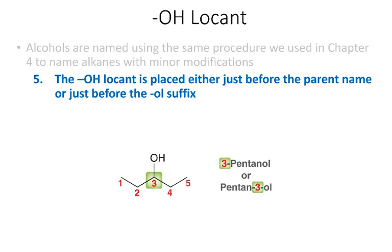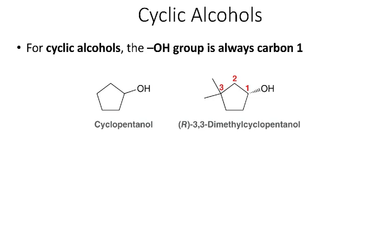When giving the locant for the OH, you can either place it before the parent name — for example, '3-pentanol' — or just before the suffix, giving 'pentan-3-ol'. I usually prefer the first method as it sounds more natural, but when mixing functional groups such as alkenes with alcohols, you have to use the second option. For cyclic alcohols, the OH is always on carbon one, so you generally don't need to give its position. For example, it's just 'cyclopentanol', and even with substituents like two methyl groups it would be '3,3-dimethylcyclopentanol'.